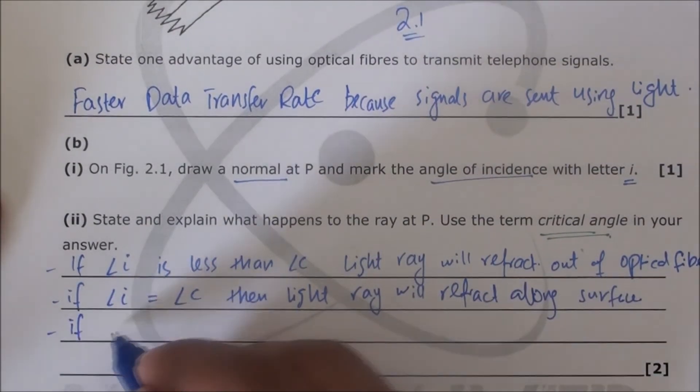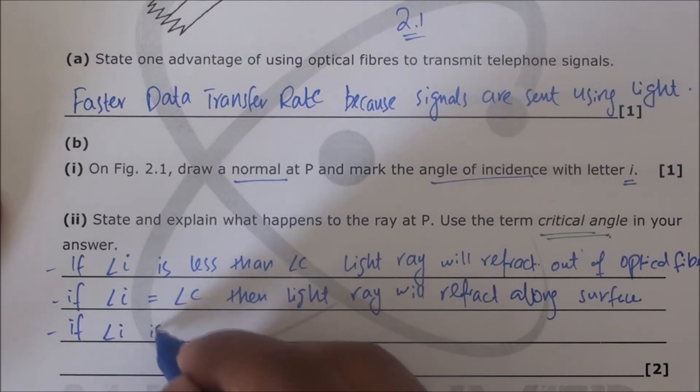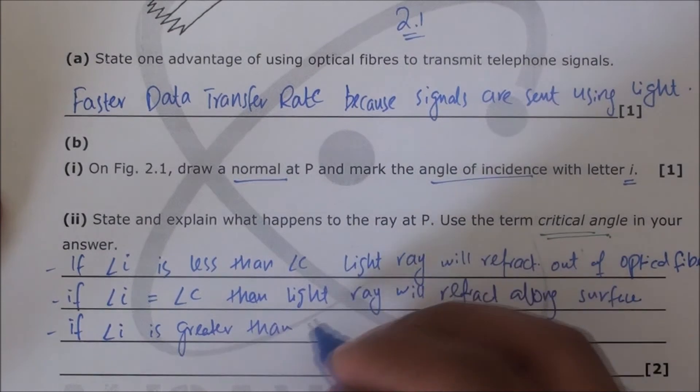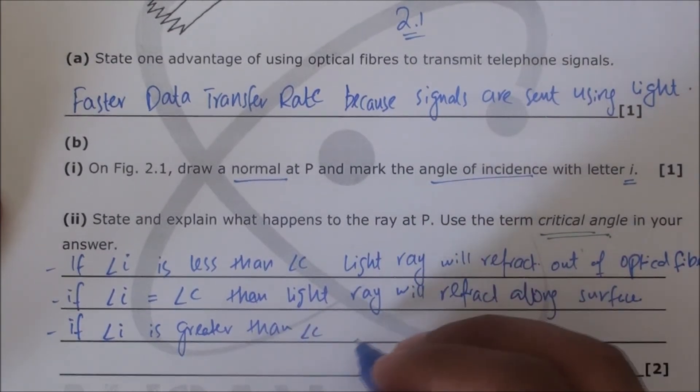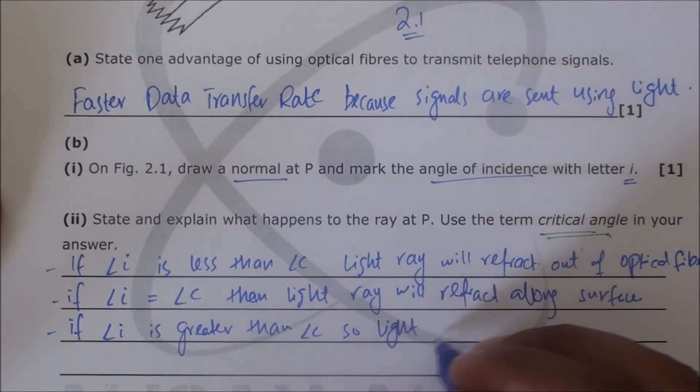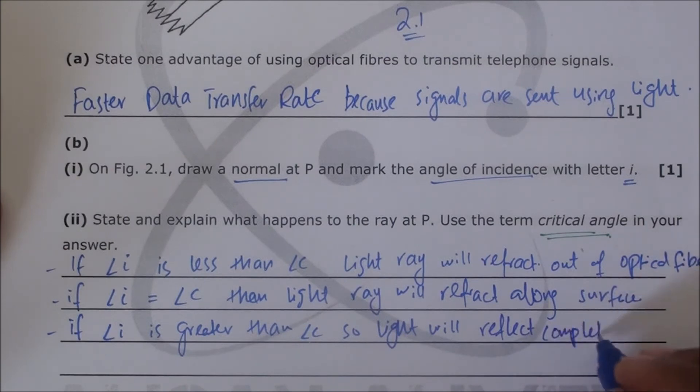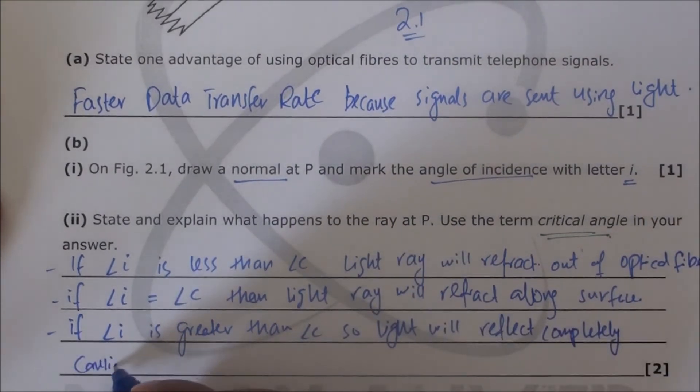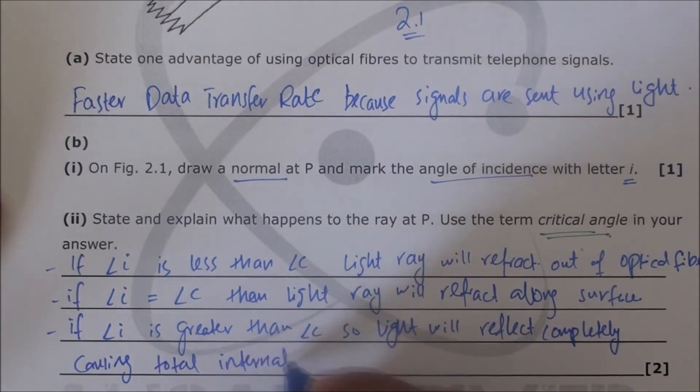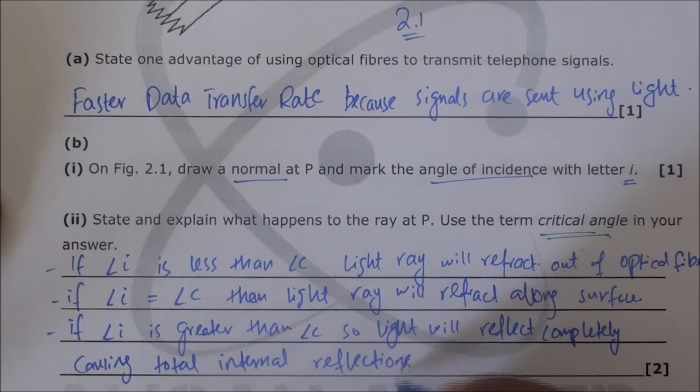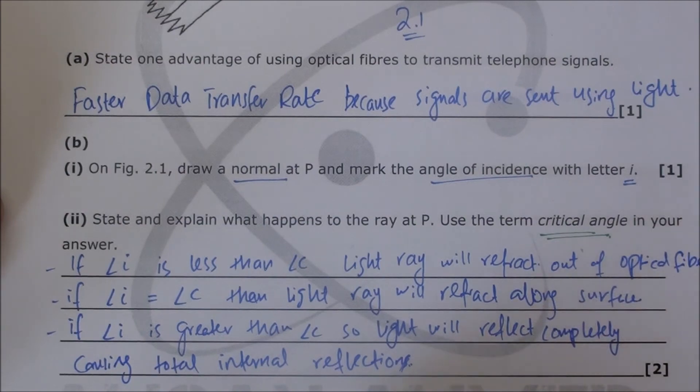Lastly, if the angle of incidence is greater than critical angle, the light ray will reflect completely causing total internal reflection. Remember these key terminologies are very important.